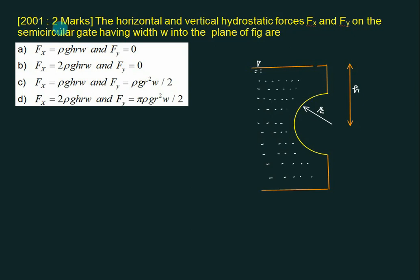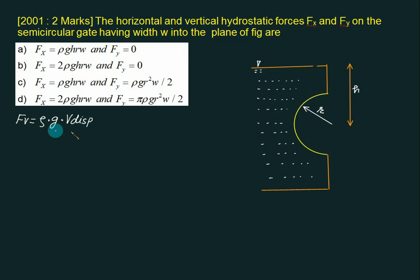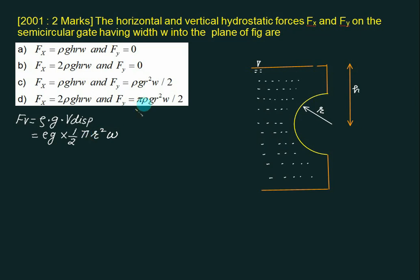This problem appeared in the 2001 GATE exam. A semi-circular plate has its center at depth h; we must calculate fx and fy. For the vertical force, the semi-circular gate displaces liquid, so FV equals buoyant force = ρg × V displaced = ρg × (1/2 × πr²) × w = (π × ρ × g × r² × w) / 2. This matches the expected answer.